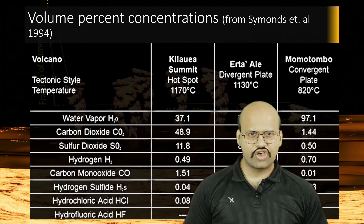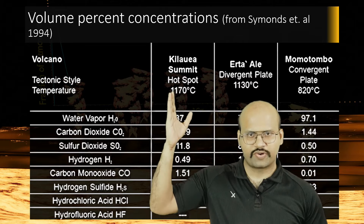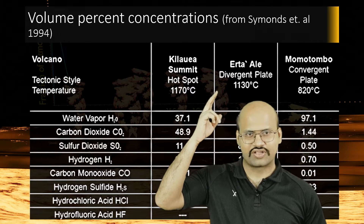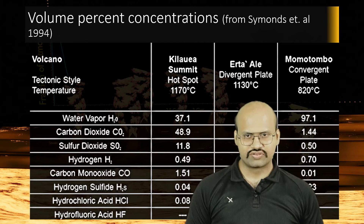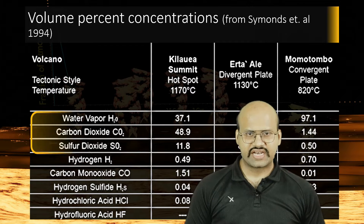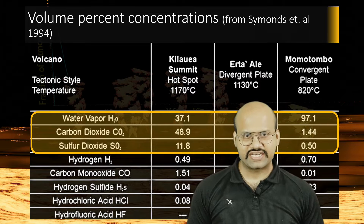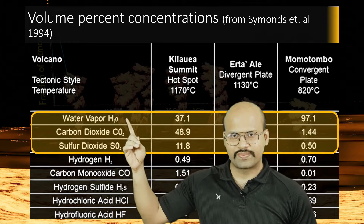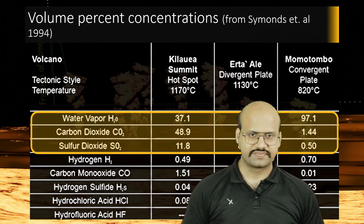If we look at all three types of volcanoes — hotspot volcanoes, divergent plate volcanoes, or convergent plate volcanoes — we will see that the major gases emitted by these volcanoes are water vapor, carbon dioxide, and sulfur dioxide.